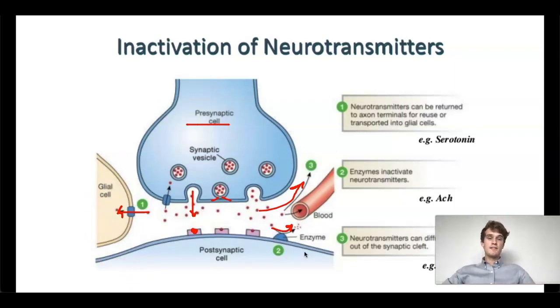The last possibility is that this neurotransmitter can be broken down by enzymes into different parts. Specifically, this happens with acetylcholine, and the enzyme involved is acetylcholinesterase. However, other neurotransmitters can also be broken down as well. So, just to recap, neurotransmitters can diffuse out, they can be taken up by the blood, or they can be taken up into supporting cells like astrocytes. And finally, they can be broken down by enzymes.